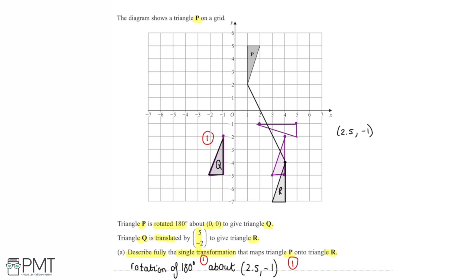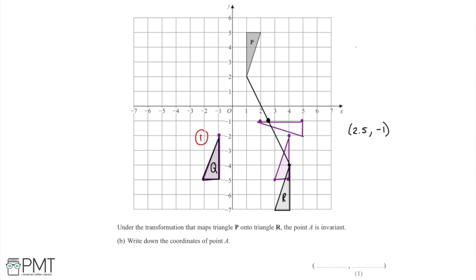Alternatively, you could describe the transformation as an enlargement by a scale factor of -1 about the same centre of (2.5, -1), and that would still get you the marks. It's a single transformation that maps P onto R, so you'd get both marks for that description as well.